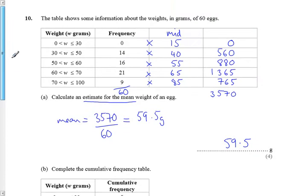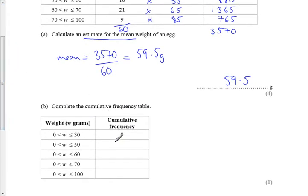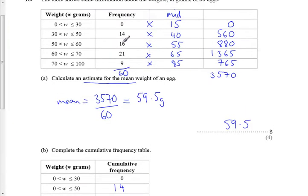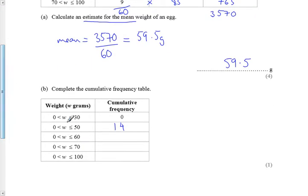So none of them weighed 0 to 30, 14 weighed in this section here. So that means 14 weighed between nothing and 50. Now when we add the next group on, we're adding on a 16, so that's between 50 and 60. But we want all of the weights up to 60, so it's an extra 16 on. So that gives us a total of the 14 and the 16 together, which is 30.